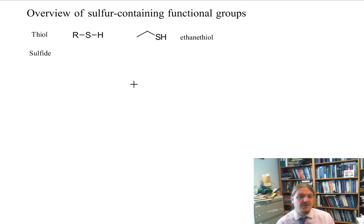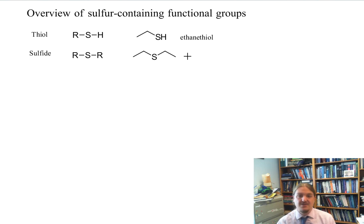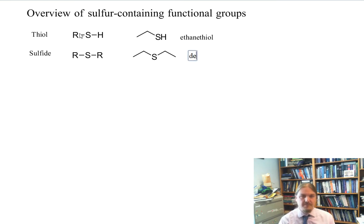Another common sulfur-containing functional group is the sulfide. The sulfide is the sulfur analog of the ether, with sulfur replacing oxygen. So a sulfide is a sulfur-containing functional group with two hydrocarbon groups attached to a single sulfur atom. And here is an example: diethyl sulfide.